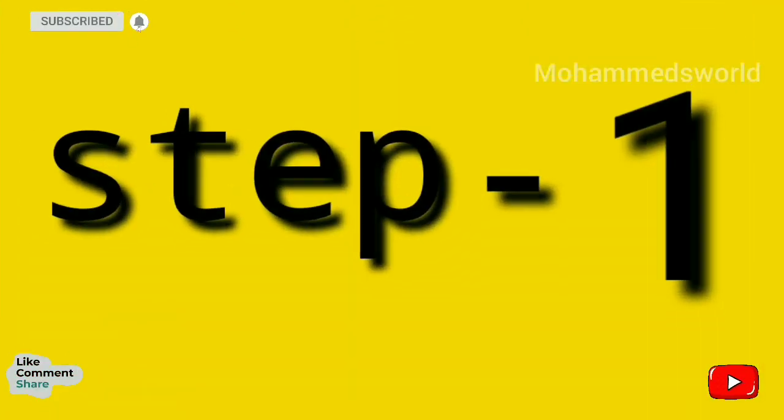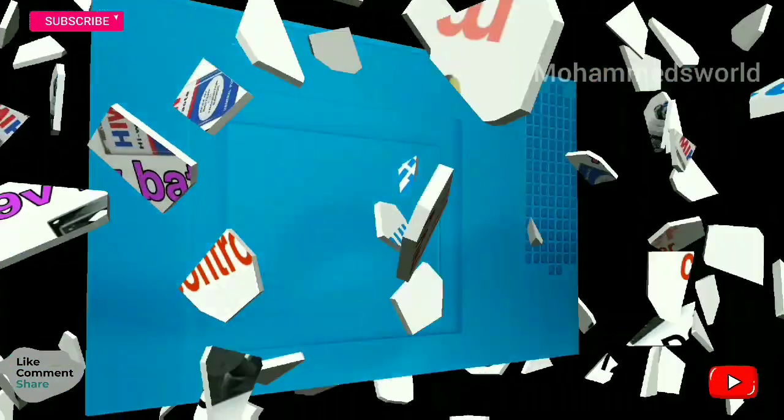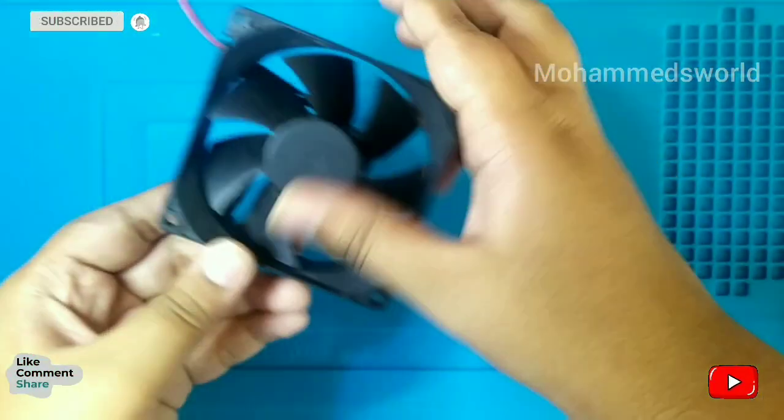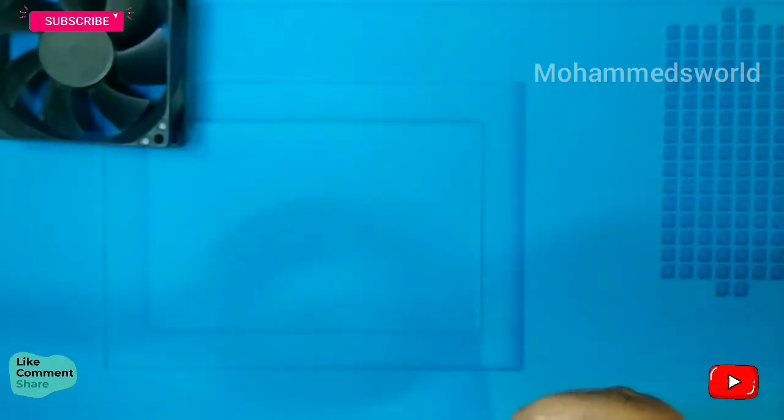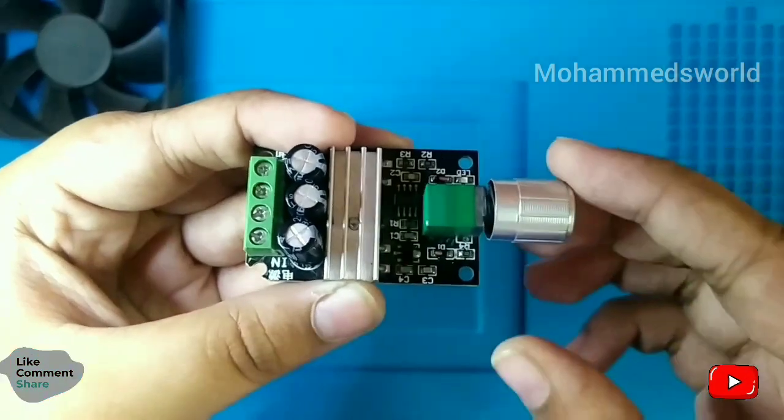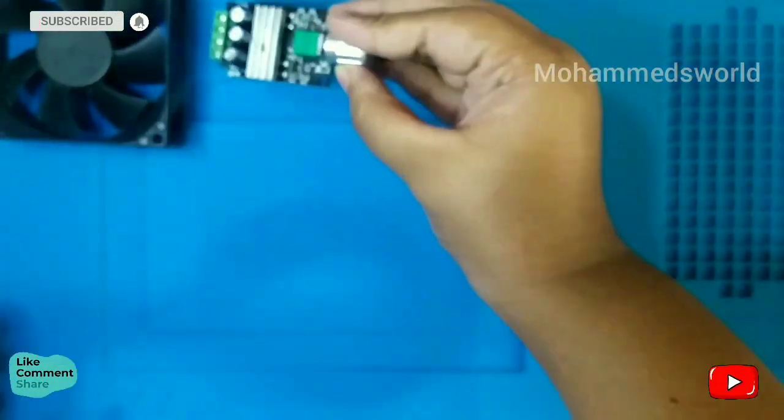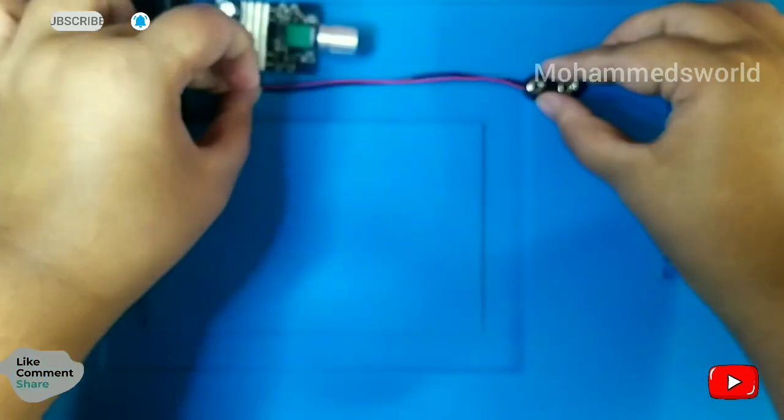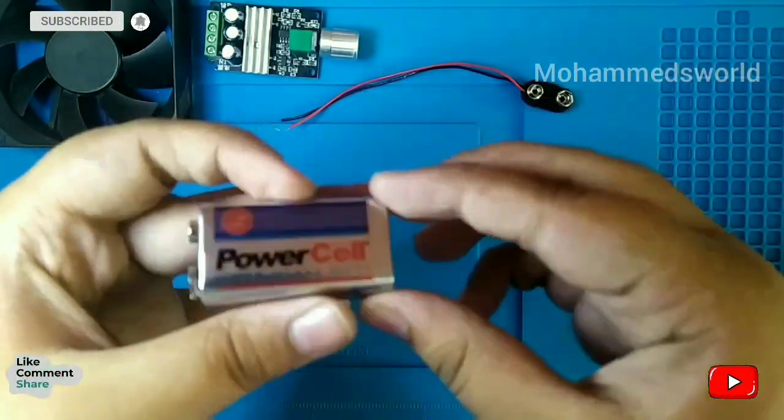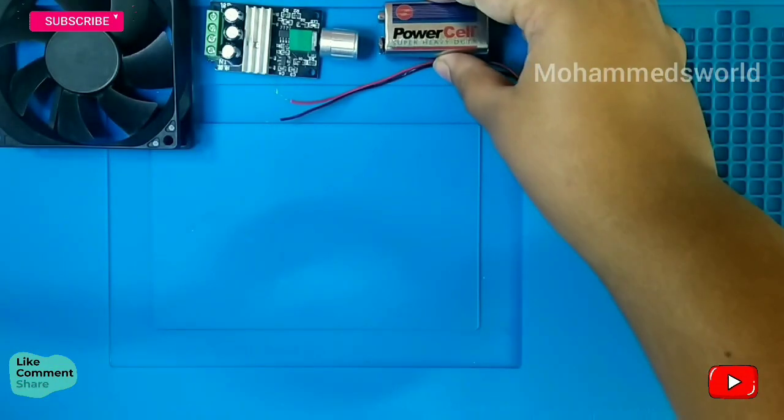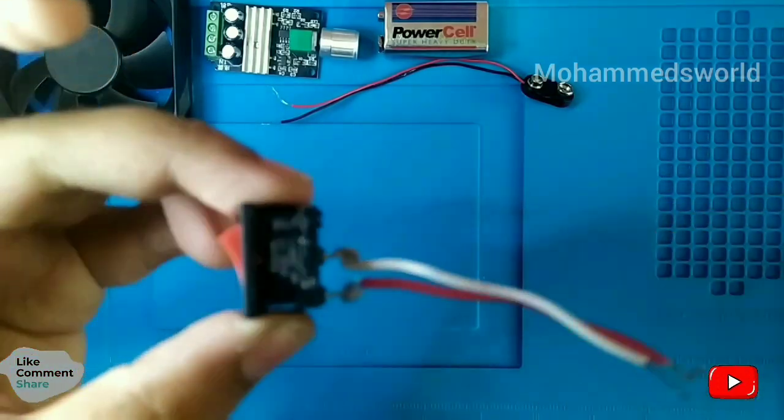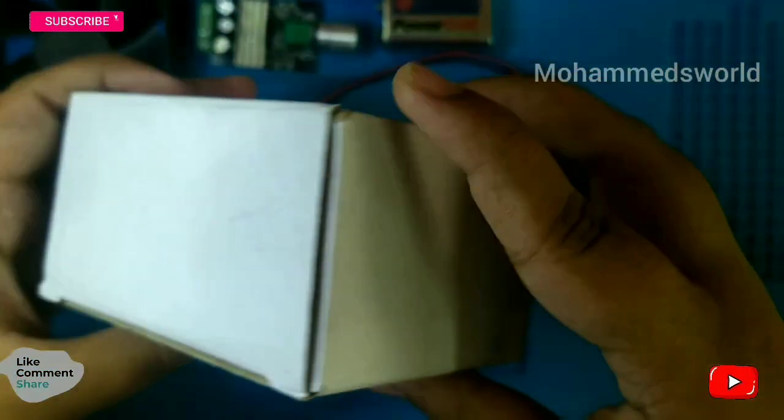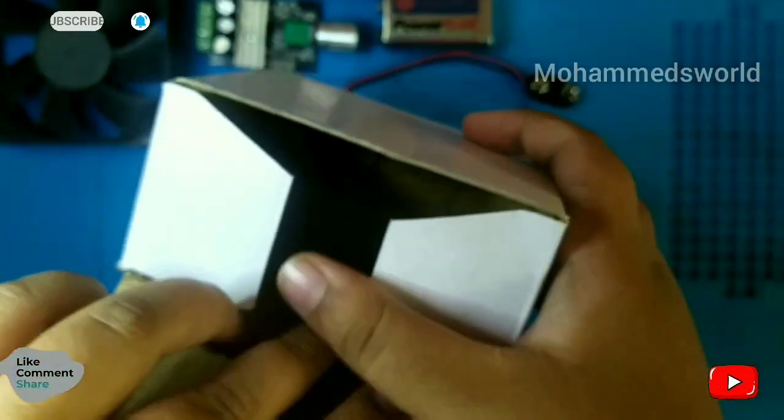Step 1: Required materials are linked in description. First, take a 12 volts DC fan. Second, you can take motor controller link in description. Third one is battery clip or battery connector 9 volts. Fourth one is 9 volts battery of any company. Fifth one is switch. Sixth one is a cardboard or any type of box as your wish.